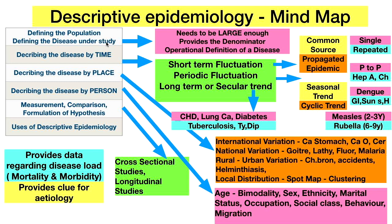Coming to the mind map of descriptive epidemiology, the key elements are: defining the population, defining the disease under study — a proper operational definition is very important in epidemiology — and ensuring the population is large enough to provide a proper denominator. Descriptive epidemiology describes the disease by time, by place, and by person.